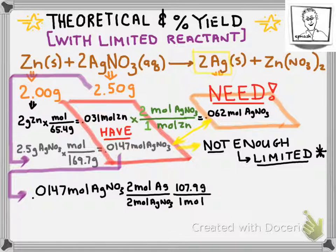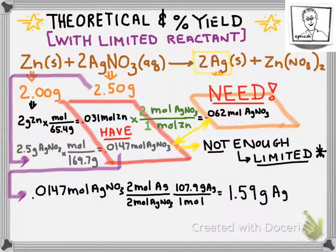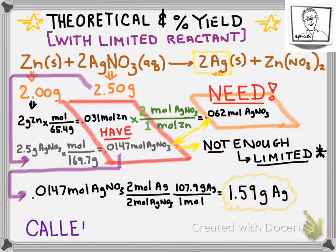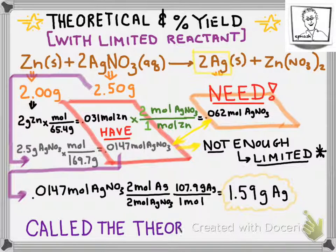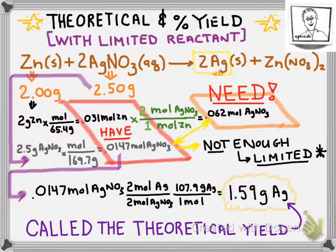You start with moles of silver nitrate. Do a mole-to-mole ratio between the silver nitrate and the thing you're interested in, which is the silver, and multiply that times the molar mass of the silver. This gives you 1.59 grams of the silver nitrate that could be produced in theory. That's in theory. This is the maximum amount of silver that you could obtain, and that is called the theoretical yield.